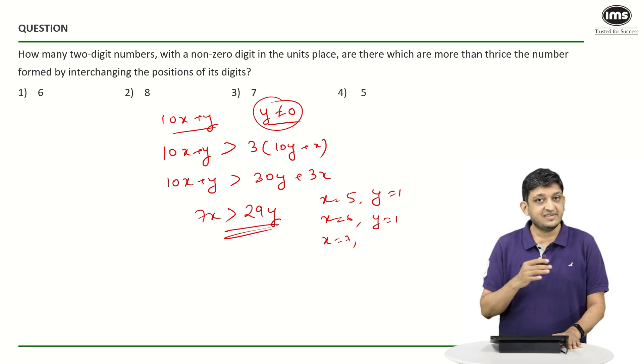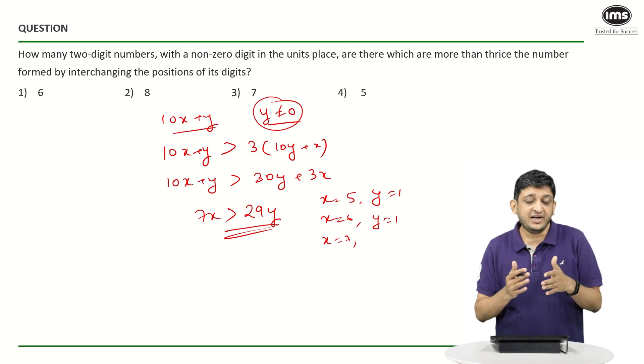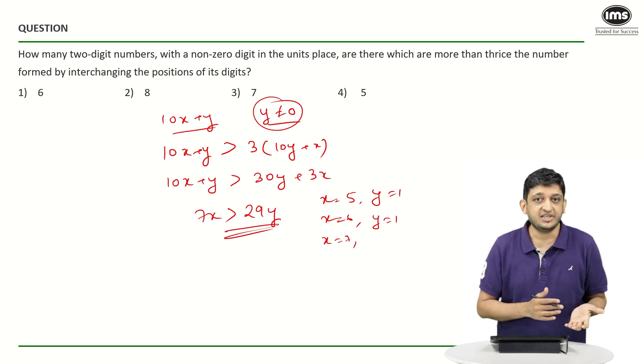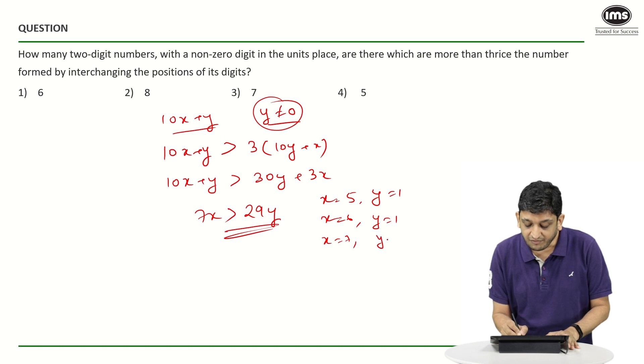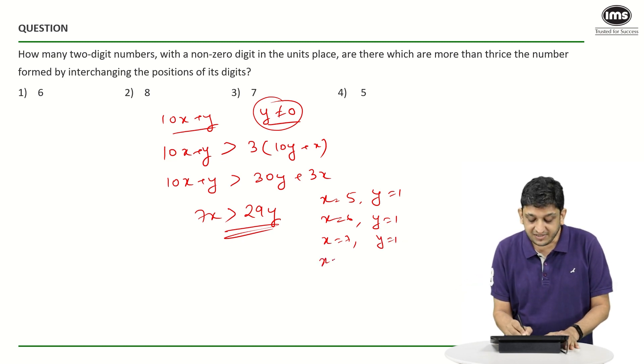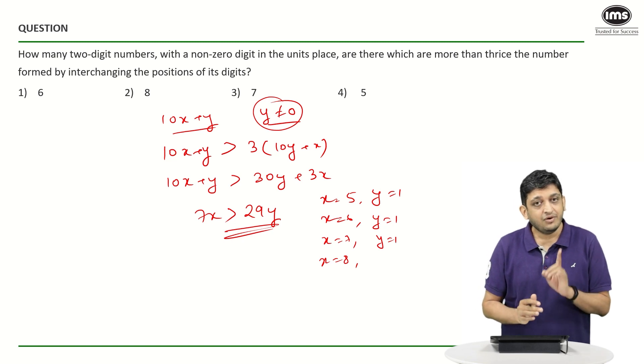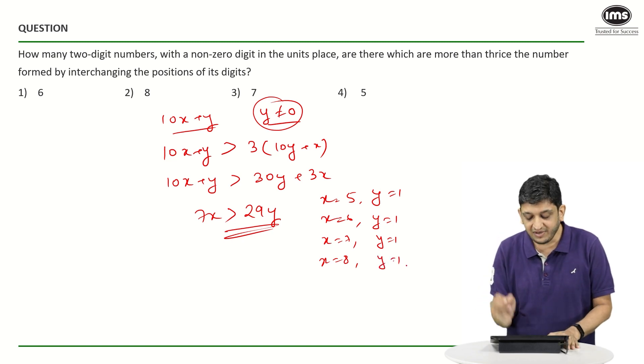What happens when X is equal to 7? Seven 7s are 49. 29 times 1 is 29. If you go to 29 times 2, you are going to get a number that is greater than 49, so we will again have only one solution for this wherein Y is equal to 1. What happens if X is equal to 8? Seven 8s are 56. 56 is still less than 58, which means that Y can take only one possible value, which is 1.